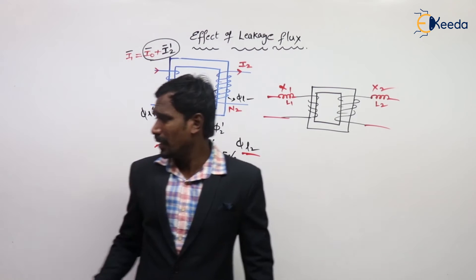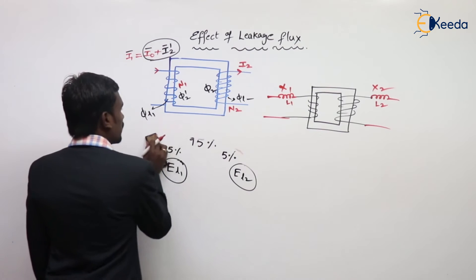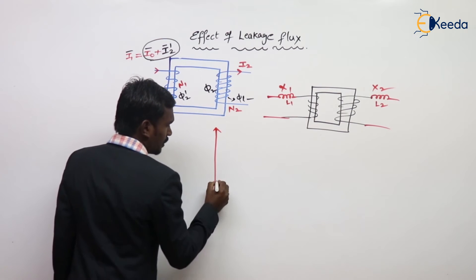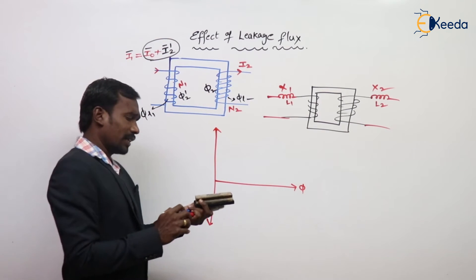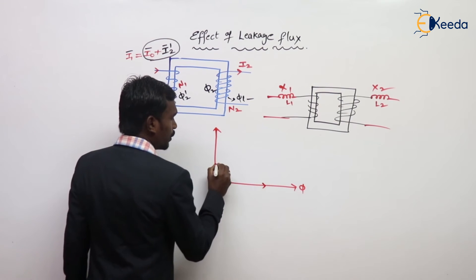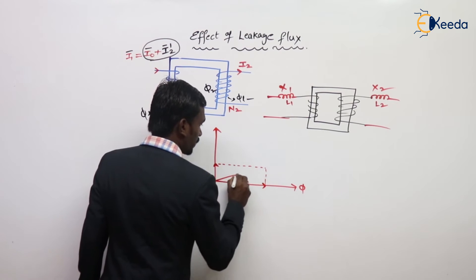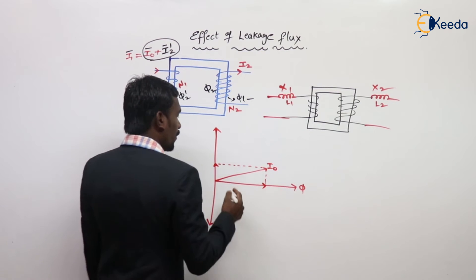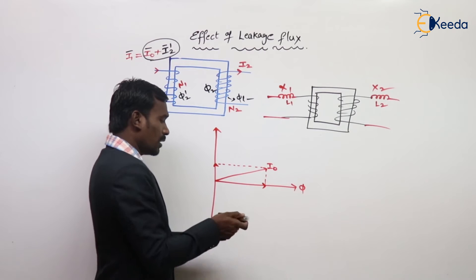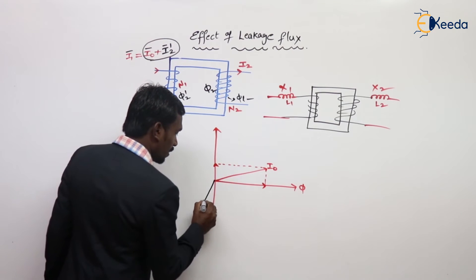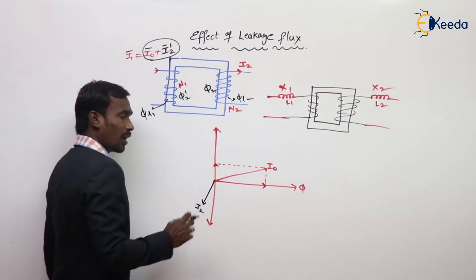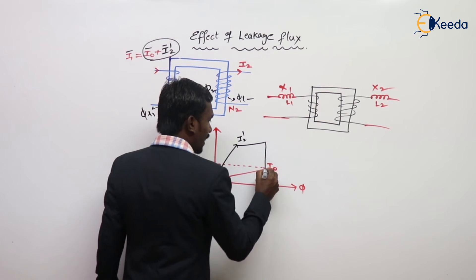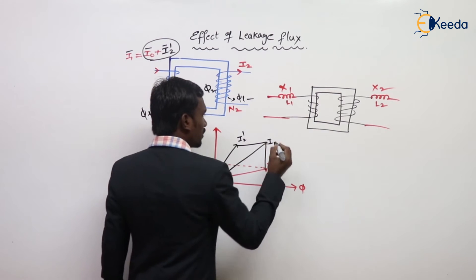Now let's look at the vector diagram for the effect of leakage flux. In general, at no-load condition, we have Iw and Imu, and their sum is taken as I0. For a lagging load, the current is lagging the voltage. This current is called I2, and the sum of I2 dash and I0 is taken as I1.